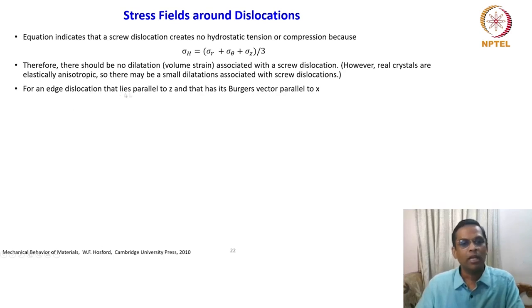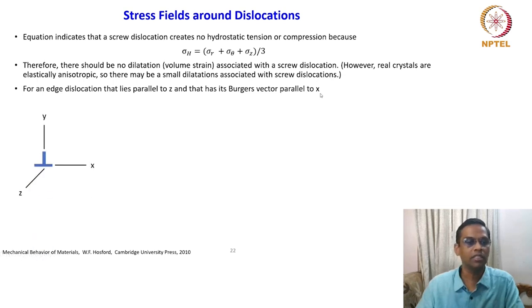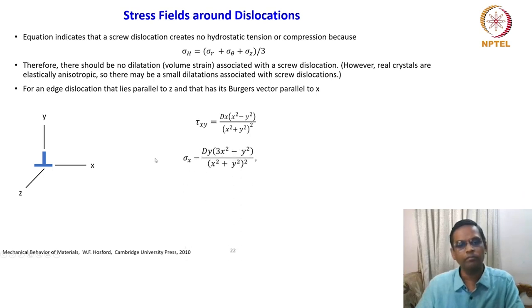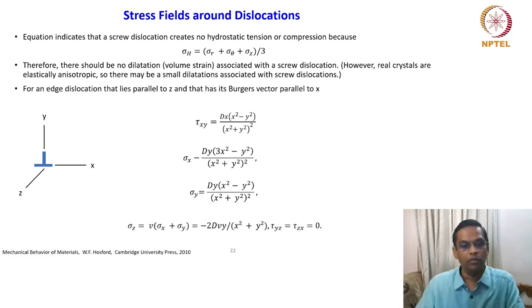For an edge dislocation that lies parallel to Z and that has its Burgers vector parallel to the X axis, the situation is slightly different. The shear stress is defined in Cartesian coordinates. What you see here is there are two normal stresses, sigma_X and sigma_Y, and a shear stress — all of them are there. You will notice that a third normal stress also exists in this case of edge dislocations.